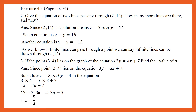Question number 3. If the point (3, 4) lies on the graph of the equation 3y is equal to ax plus 7, find the value of a. It is given that (3, 4) lies on the equation. Therefore, x equal to 3 and y equal to 4 can be substituted, which gives 3 into 4 is equal to a into 3 plus 7, that is, 12 is equal to 3a plus 7. Transposing 7, we get 12 minus 7 equal to 3a, so 3a is equal to 5 and a is equal to 5 by 3.